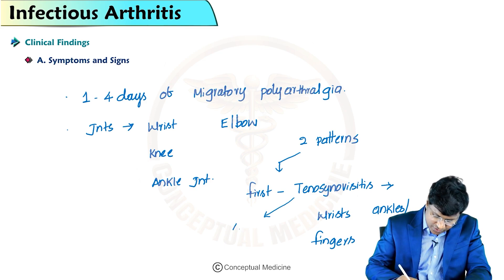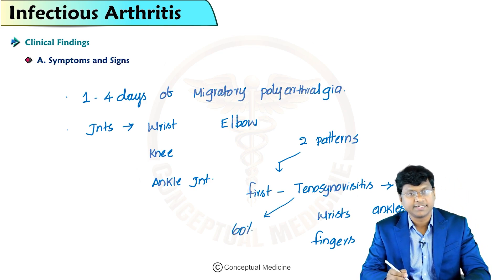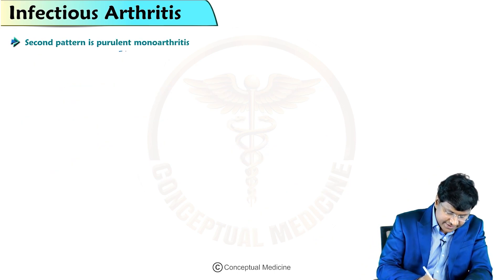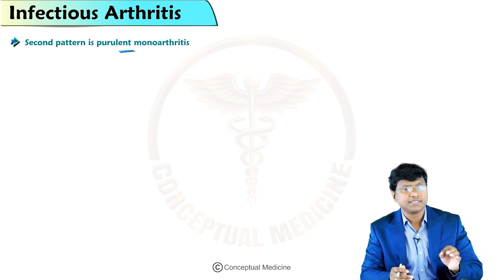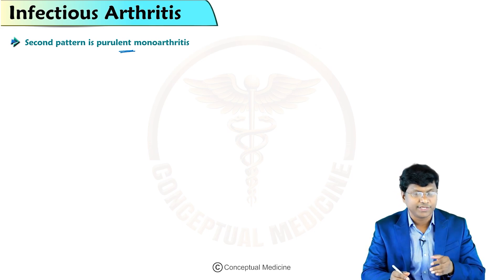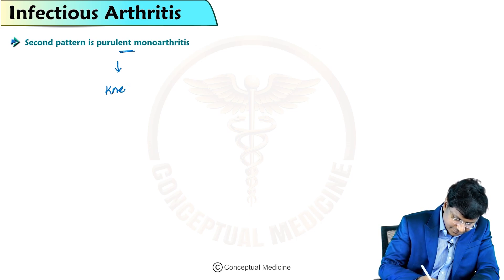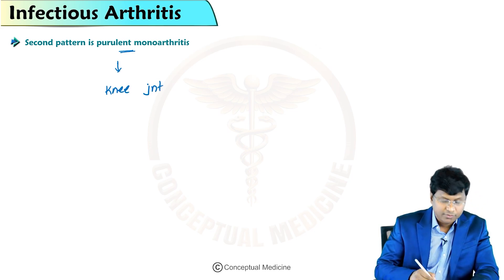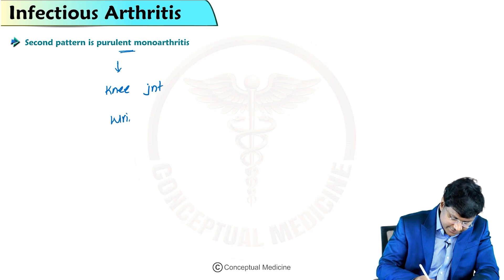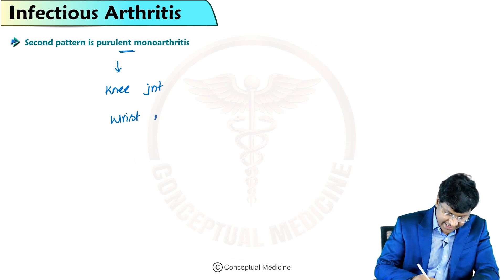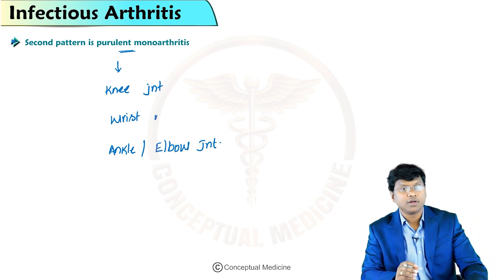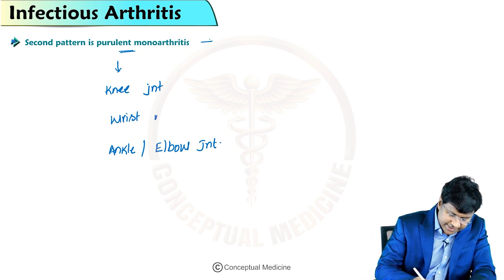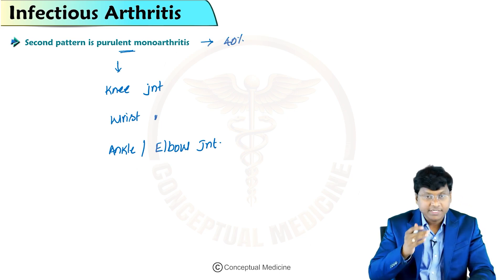Tenosynovitis is seen in almost 60% of patients with gonococcal arthritis. The second pattern is purulent monoarthritis, which most commonly involves the knee joint, followed by the wrist, and then the ankle or elbow. This purulent monoarthritis is seen in almost 40% of patients.